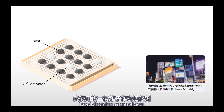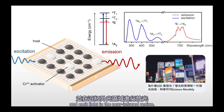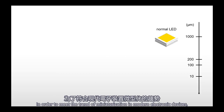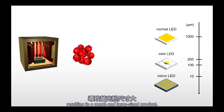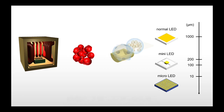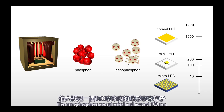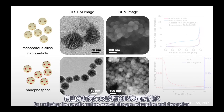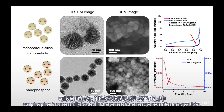In this study, I used chromium as an activator, enabling the phosphor to be excited by ultraviolet and visible light and emit light in the near-infrared region. In order to meet the trend of miniaturization in modern electronic devices, the synthetic process of phosphor is typically carried out at high temperatures, resulting in a rough and large-sized product. However, I was able to produce nanophosphors by loading the phosphor precursor solution into the pores of mesoporous silica nanoparticles and sintering it at high temperatures. The nanophosphors are spherical and around 100 nanometers. By analyzing the specific surface area of nitrogen adsorption and desorption, we can confirm that our phosphor is successfully loaded in the pores of the mesoporous silica nanoparticles.